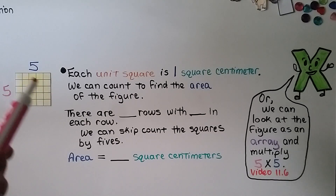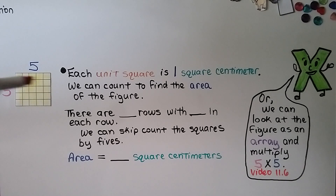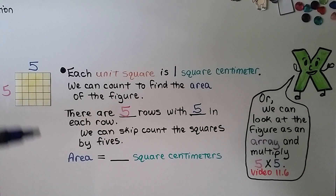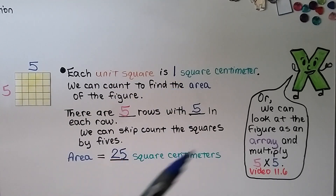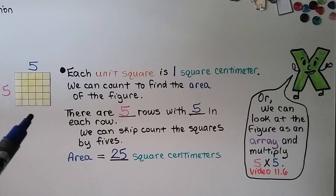Here, each unit square is one square centimeter. We count to find the area: there are five rows and five columns. We can skip count by fives — five, ten, fifteen, twenty, twenty-five — so the area equals twenty-five square centimeters. We can also look at the figure as an array and multiply five rows times five in each row. We'll talk about that in our very next lesson, 11.6.